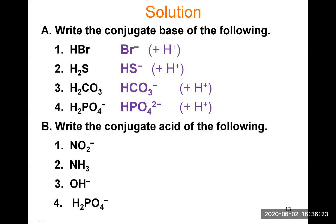Those were the conjugate bases of acids. Now in Part B, we write the conjugate acid of these symbols, which represent bases. These are bases and you find what they become when they accept a proton — their conjugate acid. For NO2-, to find the conjugate acid, you add an H+ to it. The formula becomes HNO2 (H is written first), and the positive charge from H+ cancels the negative charge of NO2-, giving a neutral molecule.